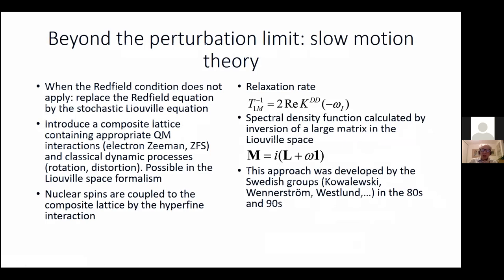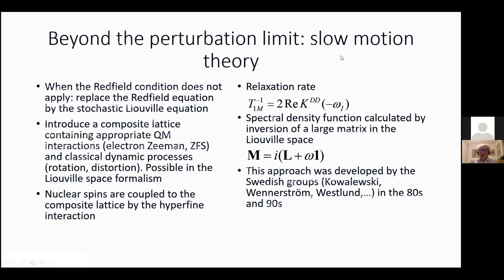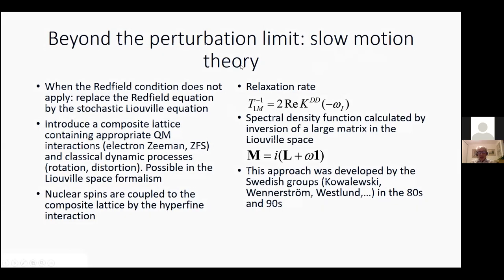Now we have mentioned the problem of electron relaxation and the problem of low field, but we still have the problem with the perturbation regime. We worked on this in the early 1980s in Stockholm, when Håkan Wennerström was head of the division of physical chemistry. We developed what is now known in the literature as the slow motion theory, sometimes called the Swedish slow motion theory. We replaced the Redfield equation for the motion of nuclear spins with the stochastic Liouville equation.